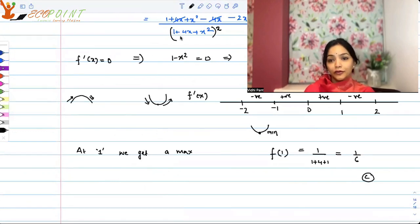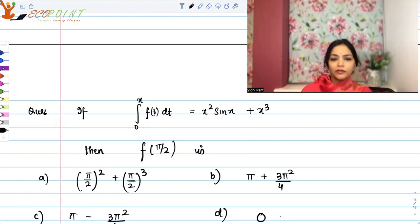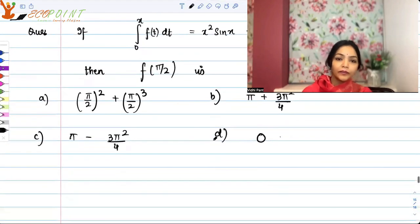Now a little tougher question. The next question I want to discuss, it's not tougher if you know the concept. If you do not, if you can't recall the concept, then maybe it is tough. So integral 0 to x ft dt is equal to x square sin x plus x cube. Then f of pi, f at pi is pi by 2 square plus pi by 2 cube. Is it pi plus 3 pi by 3 pi square by 4? Is it pi minus 3 pi square by 4? Or is it 0? So let's figure it out. But how? What do I do to figure this out?